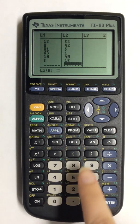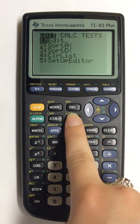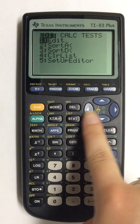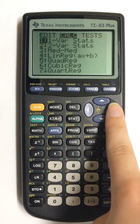To begin, access the information by first pressing STAT and using the over arrow to highlight CALC at the top of the screen.